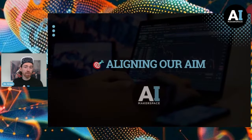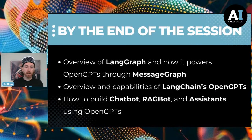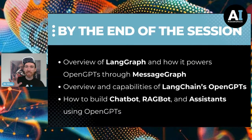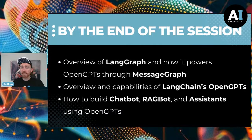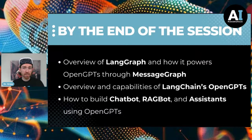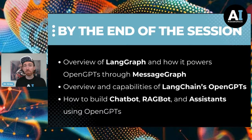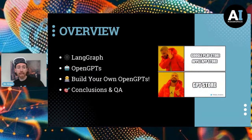Let's align our aim for the day. We're going to cover LangGraph, and we're also going to understand through our coverage of LangGraph how it actually powers OpenGPTs through MessageGraph. A lot of what we'll talk about isn't necessary to understand what MessageGraph is doing, especially if you've built anything with the OpenAI API or OpenAI Assistants. However, it is useful to get the context. The OpenGPTs are a low-code solution you can pick up off the shelf for free to build chatbots, RAG applications, and more complex assistants.